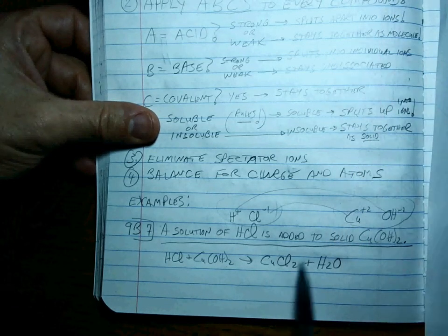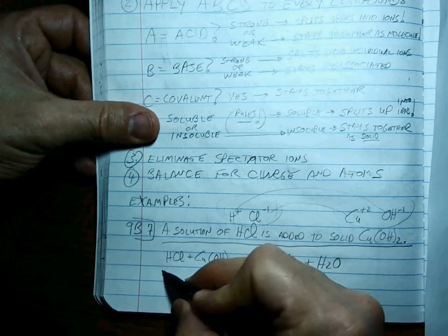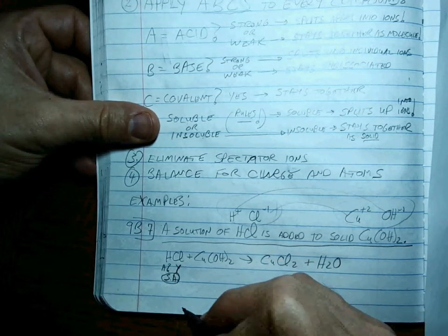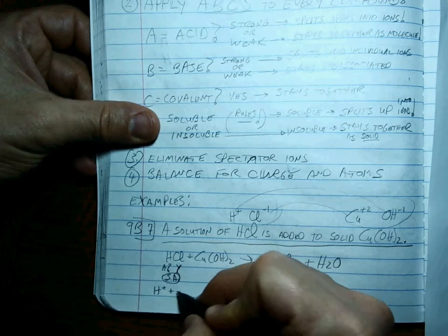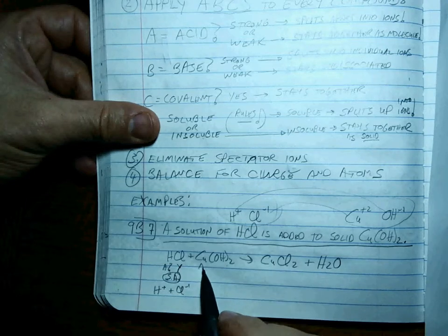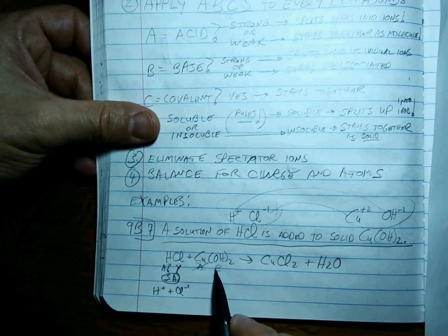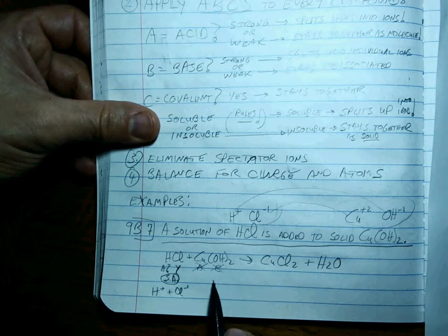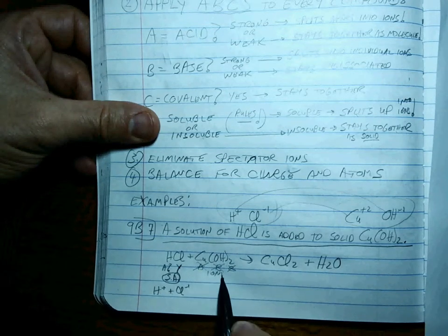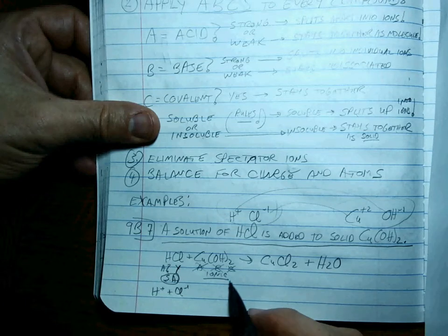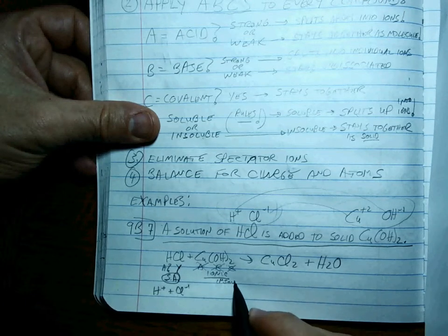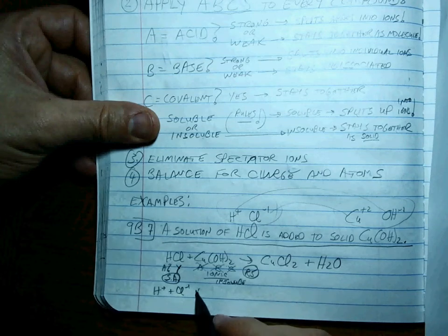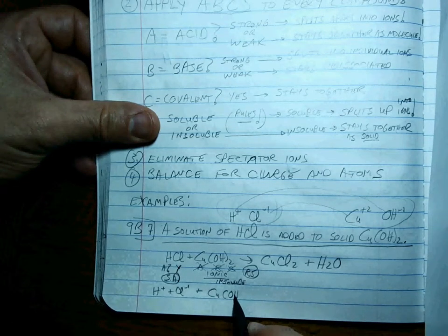Now let's go back and apply the ABCs. Is this an acid? Yes. It's a strong acid, so you write it as H+, plus Cl-, split up. Is that an acid? No. Is it a base? No. That is not one of the strong bases. It's not the weak base. And it's not covalent, so it's ionic. Is it soluble or insoluble? It's insoluble. Based on rule 5 of the solubility rule, which means you would write it as the solid.